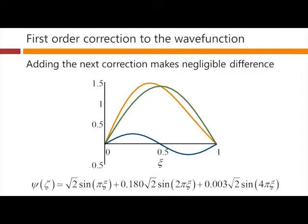We could add in the next wave function up, but it's so small, the correction from that, that we don't even see it on this graph. So we get a fairly good approximation here to our wave function by taking just the first two of these terms.